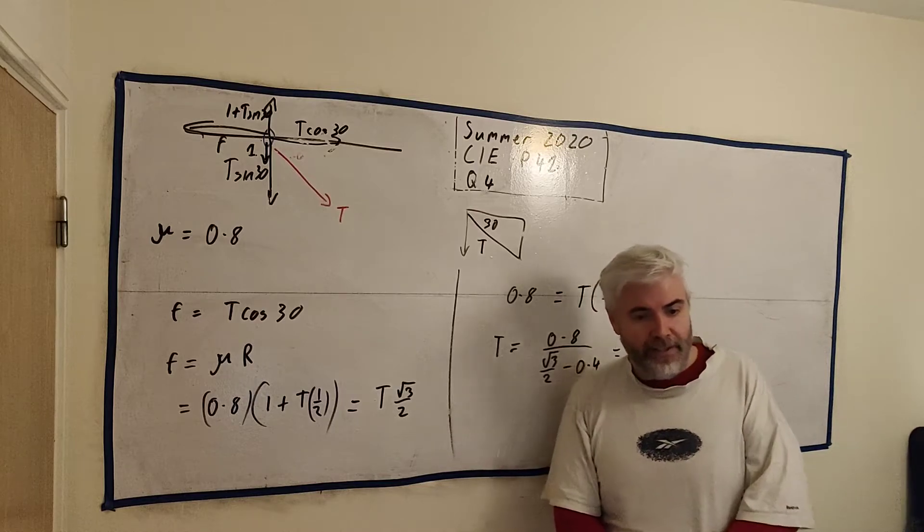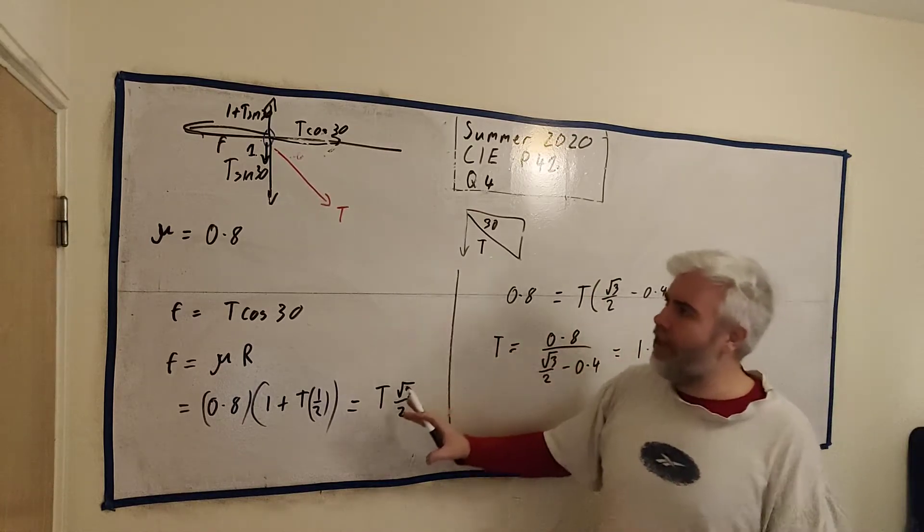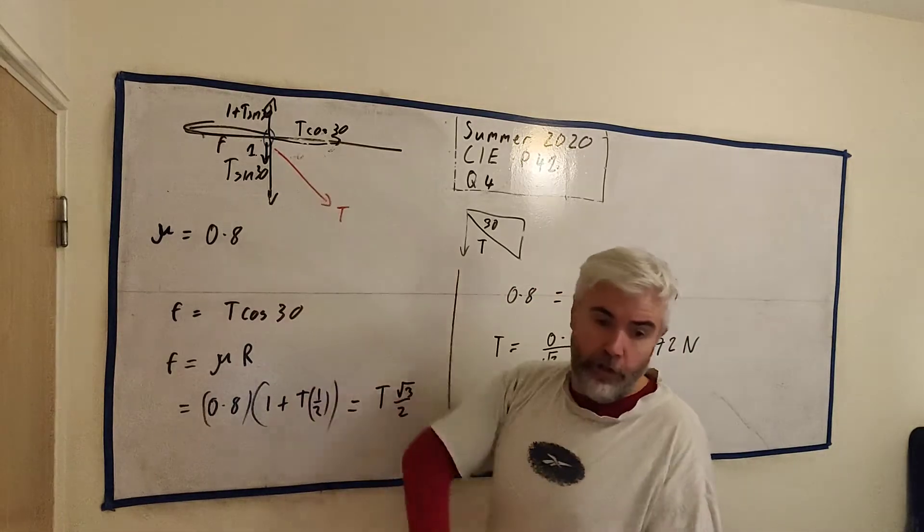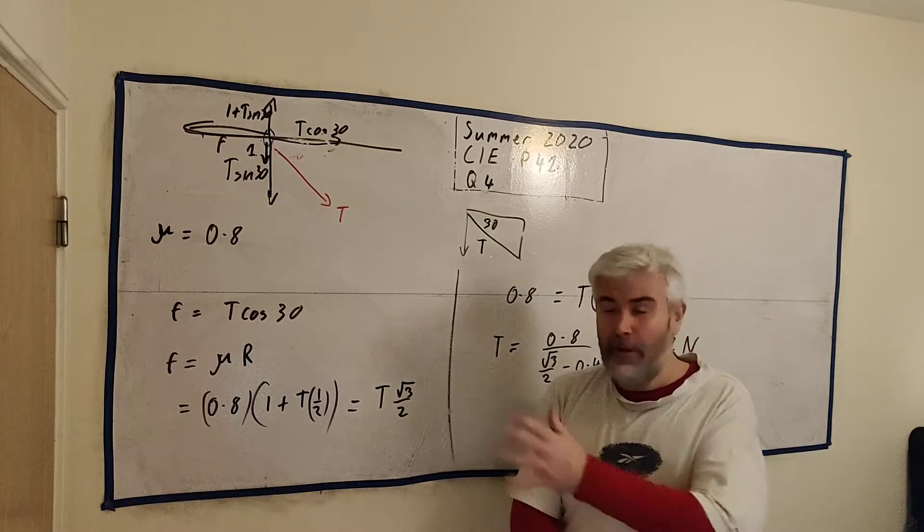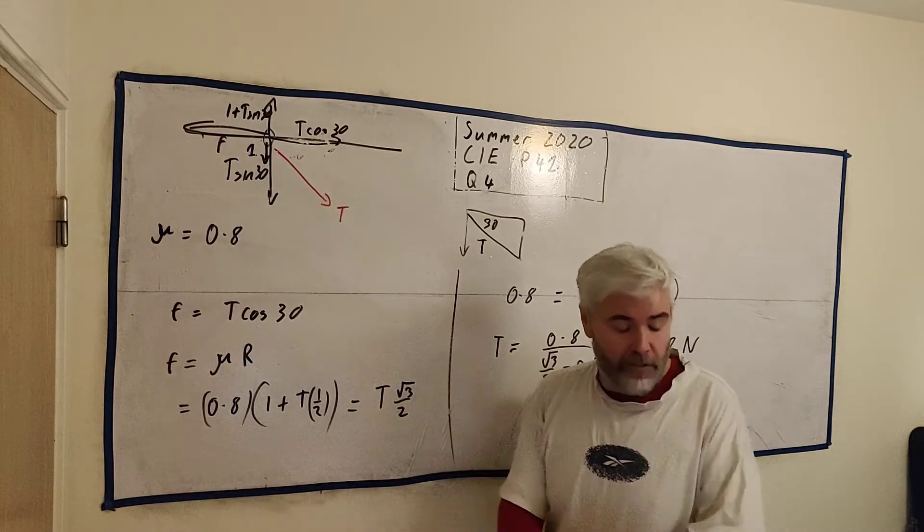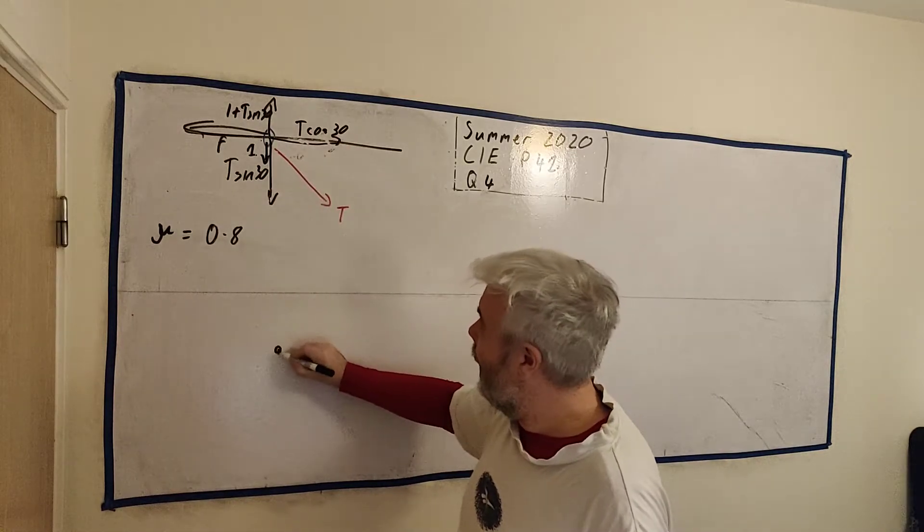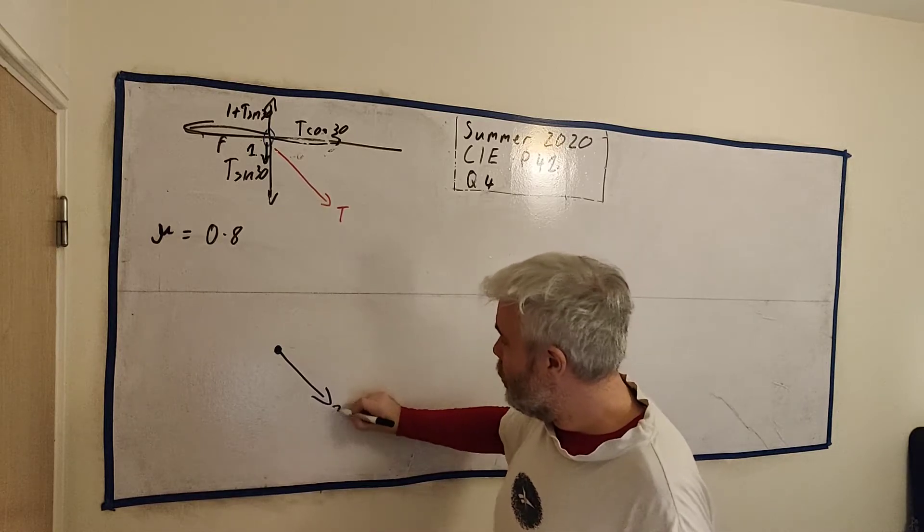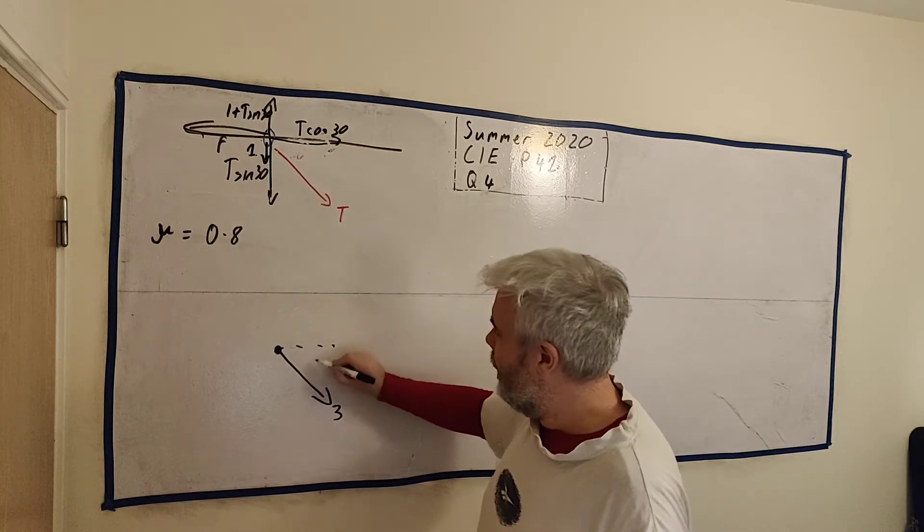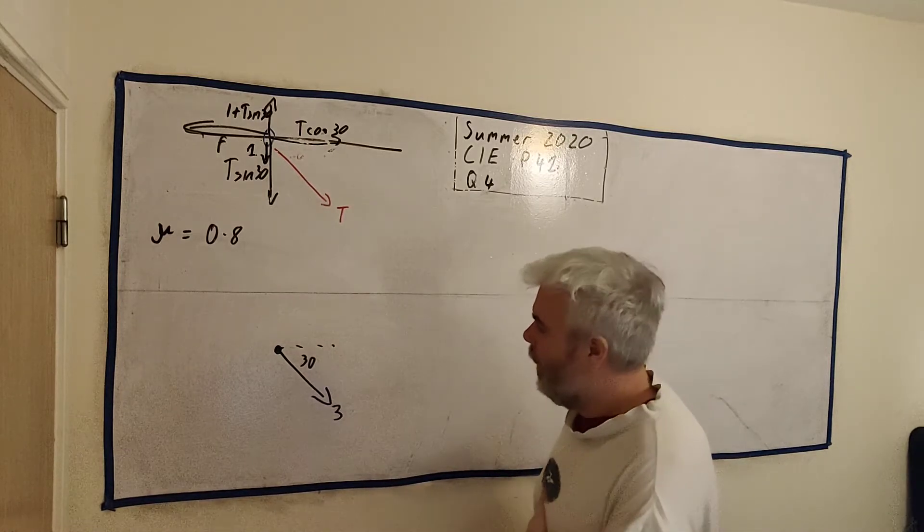Okay, for part B, they ask us to find the acceleration of the ring when T equals 3. Let's rub this out and we'll draw a new picture again. Just so we can see the slight differences. It's going to be fair. I could reuse this. You wouldn't have to do this in the exam. We still need the coefficient here. I'll leave the old picture and we'll draw a new one again. We have the ring here. There's going to be a force coming down this way, 3 this time. And that's at 30 degrees still.